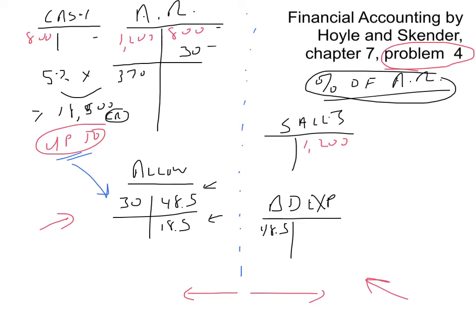If you can do two years, you can do twenty-two years — so let's make sure we do year two. In year two they have sales of $1,200,000, so that increases the sales account. They collect $800,000, reducing accounts receivable and increasing cash. And again $30,000 is written off as bad: credit accounts receivable for $30,000 and debit the allowance balance for $30,000.